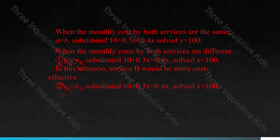If it is the other way around and A is less than B, substituting gives 10 plus 0.3x less than 0.4x, which solves to X greater than 100. In this scenario, service A would be more cost-effective. When solving problems like this, this entire slide is the answer — it's not just one sentence.